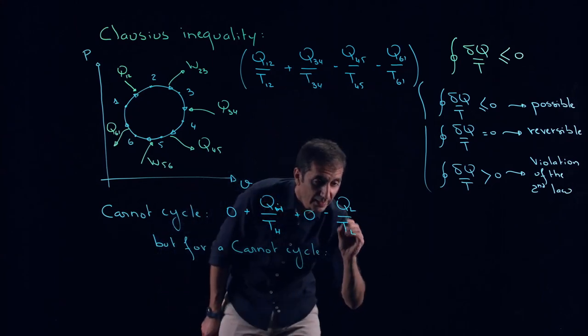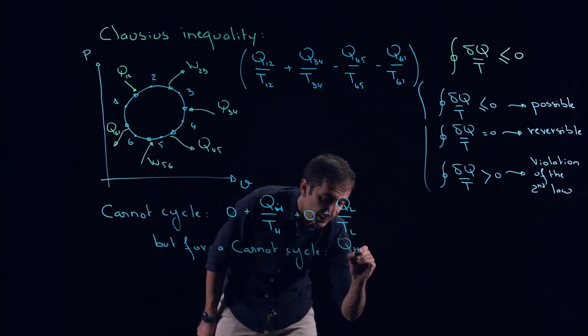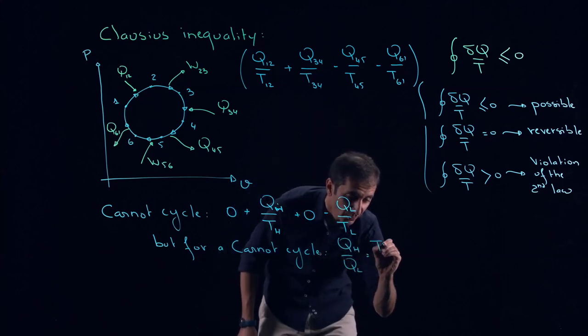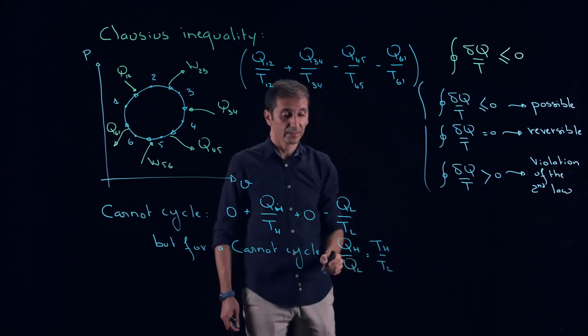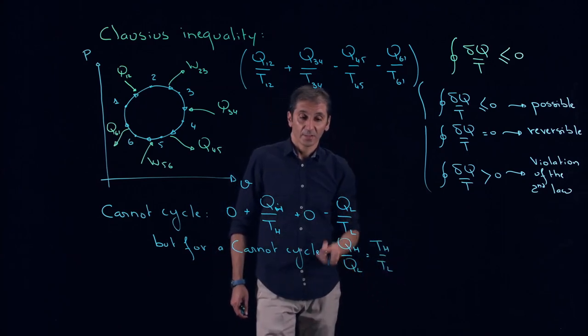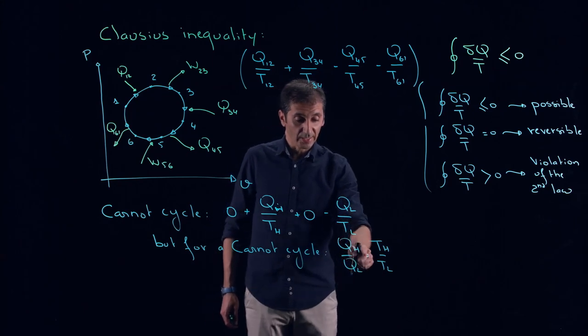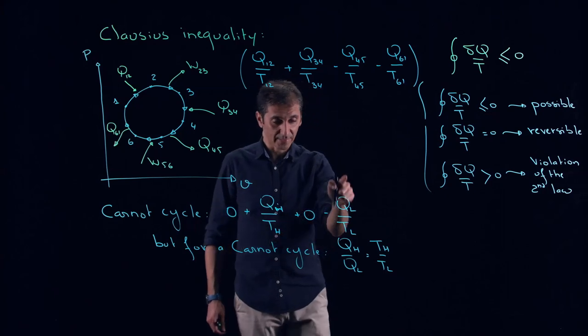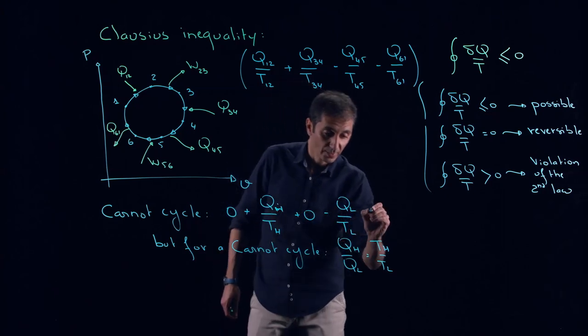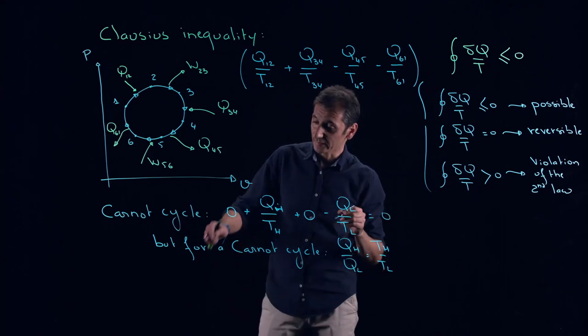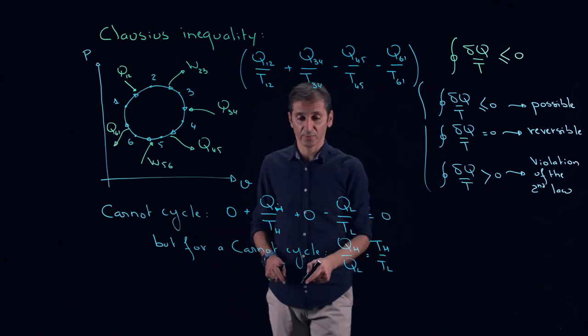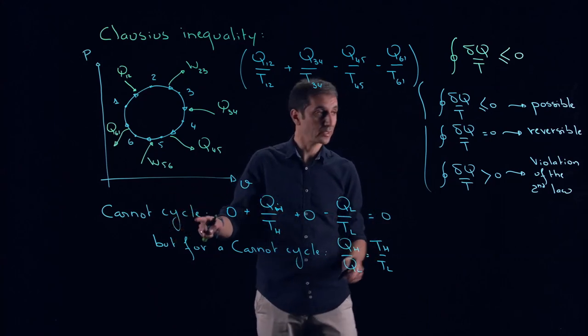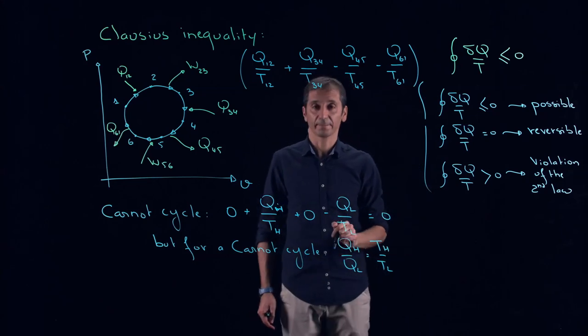We have that the ratios of the heat is equal to the ratios of the temperatures. So this means that my QH over TH is equal to QL over TL. So this means that this term is equal exactly to this term. So this gives me that the summation of all the terms here will be equal to zero. And from there, I can claim that Carnot cycle is a reversible cycle.